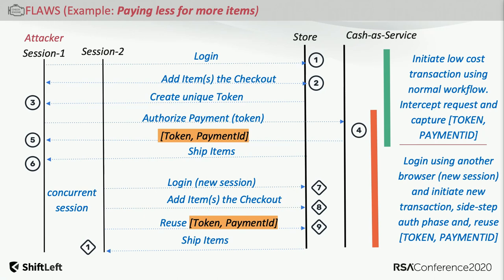Cases are best illustrated with visualization, so let's deep-dive into what 'business process out of order' means with a real example. This is a scenario where an attacker creates two sessions with a particular e-commerce website that uses a payments provider. The first course of action is login, then add a series of items to the checkout.